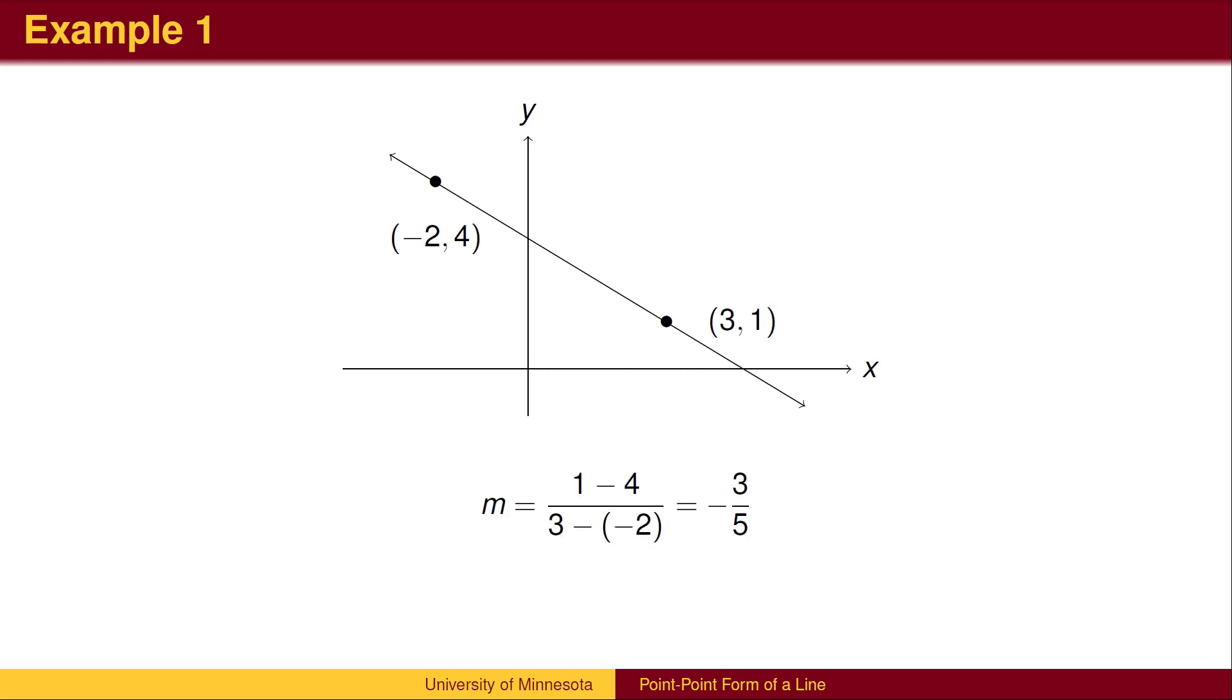Now that we know the slope of the line, we can use the point-slope form of the line to write the equation. We can use the point negative 2, 4, or we could use the point 3, 1.